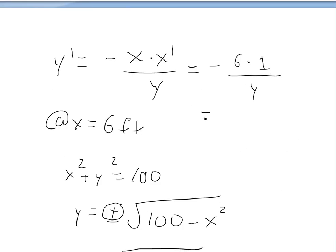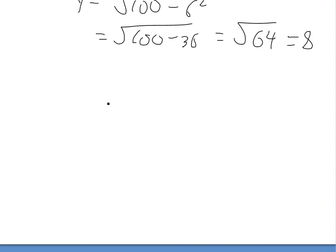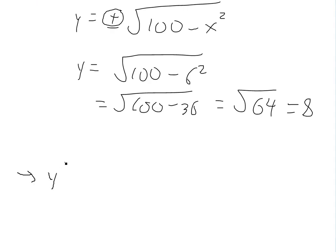So we just plug this in right here. So negative 6 feet times 1 foot per second divided by 8 feet. And the feet cancel, so we're left with the units feet over seconds. So y prime is equal to negative 6 over 8 feet per second.